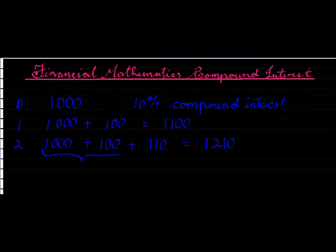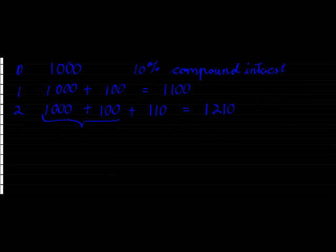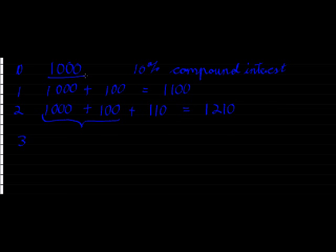The next year, in the third year, instead of calculating my interest on my principal amount, I calculate it on the present amount. The present amount, which is in this case 1,210, so I've got my 1,000, the original amount, plus 100 in the first year.